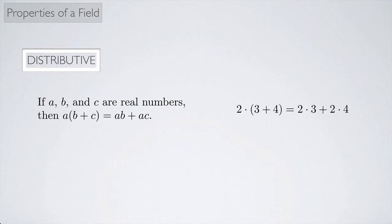Finally, we have the distributive property, and that says that if A, B, and C are real numbers, then A times the quantity B plus C equals A times B plus A times C. And so this is the only property that really combines both addition and multiplication, or two binary operations. And you've seen this many, many times, where you've distributed some algebraic expression. So for example, 2 times the quantity 3 plus 4 can be rewritten as 2 times 3 plus 2 times 4.